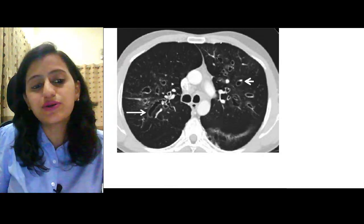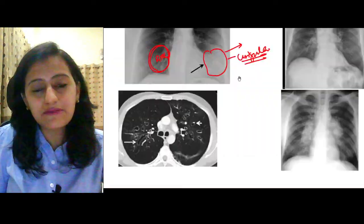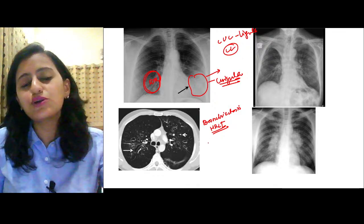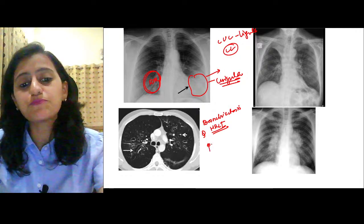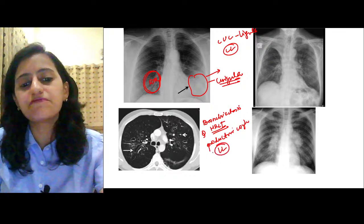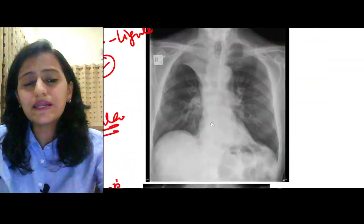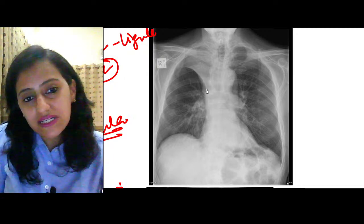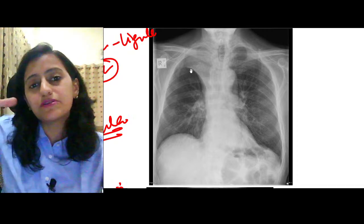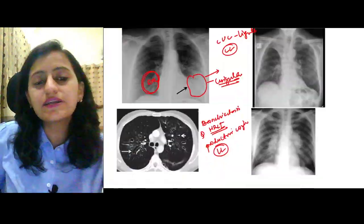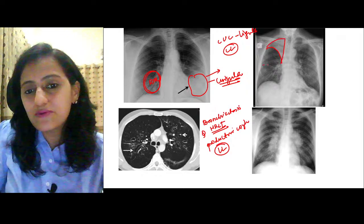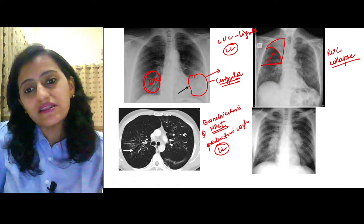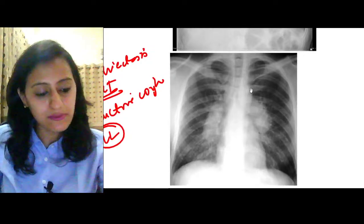CT scan image showing dilated bronchus — tram-track sign and signet ring sign — this is bronchiectasis. HRCT is the best investigation. Classically an elderly patient with productive cough; lower lobe is more commonly affected. Right upper lobe collapse: the horizontal fissure is pulled up — collapse pulls fissure toward its side. In consolidation the fissure stays in its normal position.